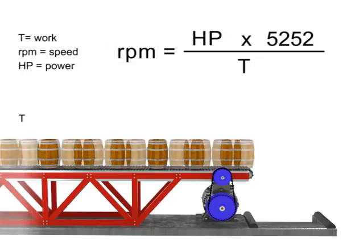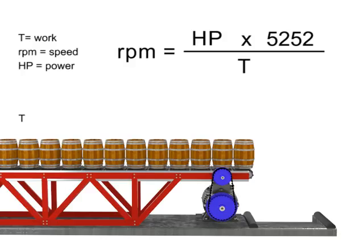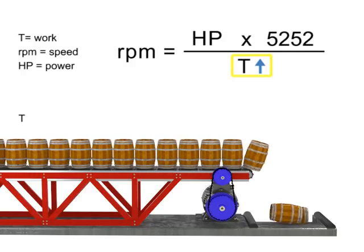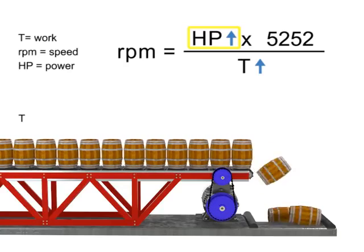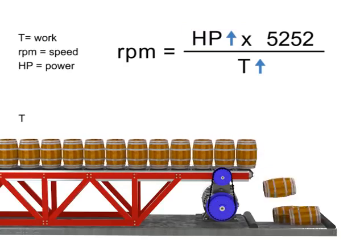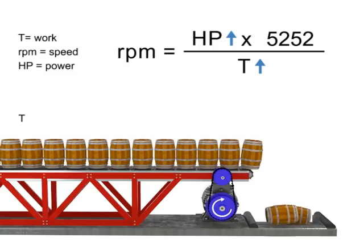Let's say we want production to increase but the speed of the conveyor to remain constant. If torque increases, horsepower also increases to compensate. This means a more powerful motor is needed to produce more torque at the same speed.